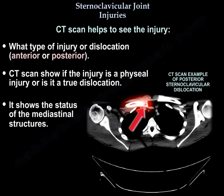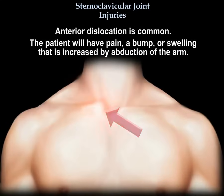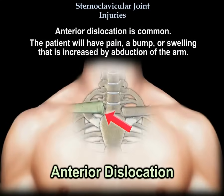CT scan helps to see the injury — what type of injury or dislocation, is it anterior or posterior, is it a physeal injury or a true dislocation, and what is the status of the mediastinal structures. Anterior dislocation is common; the patient will have pain, a bump or swelling, increased by abduction of the arm.